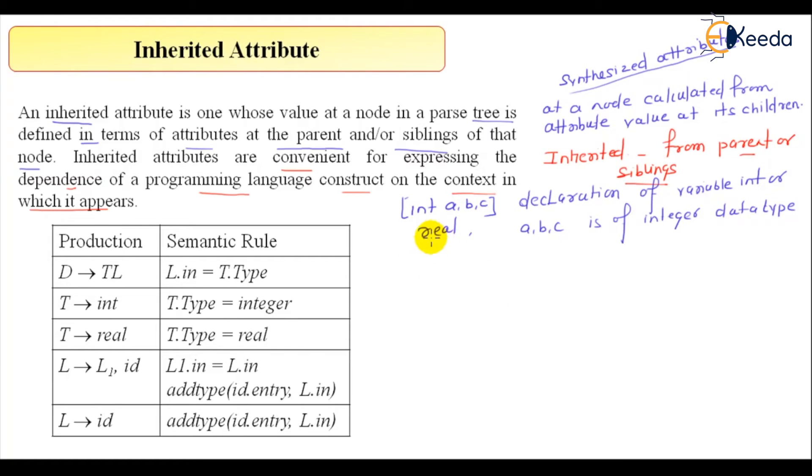So, let's parse this int a and b only. Now let's have this parse to derive D, L, and T derive, let's say, int, L derive L, comma, identifier, and L to identifier.